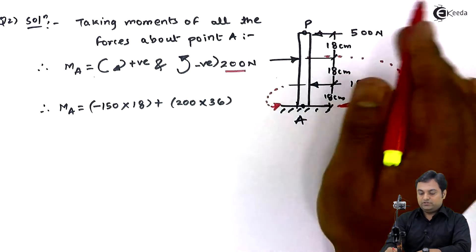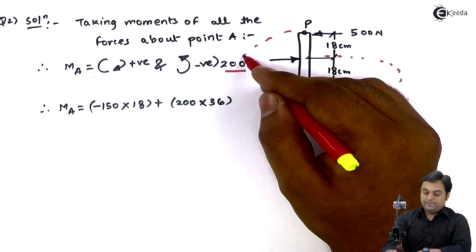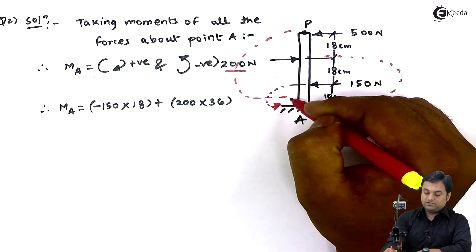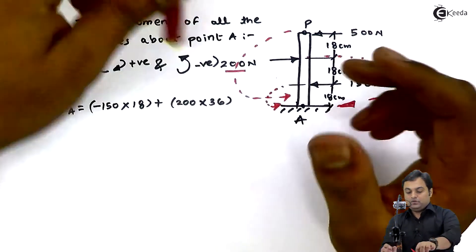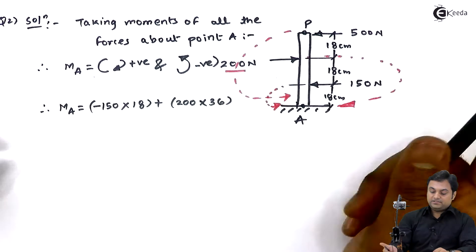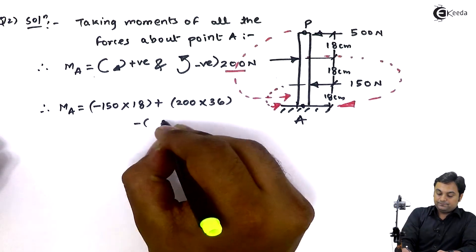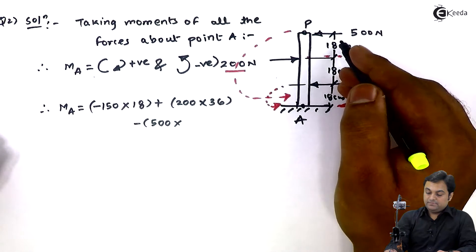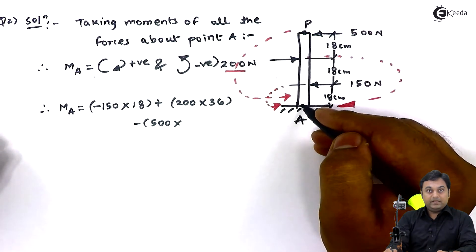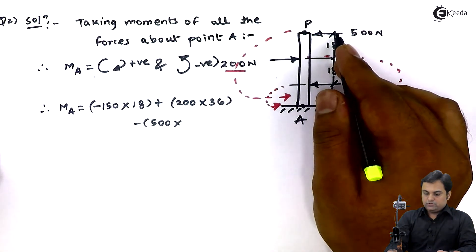I can write it as minus 500 into 18 plus 18 plus 18, because I am taking moment at point A so I have to add all these distances to get the distance between point A and 500 Newton force.